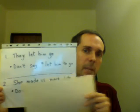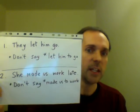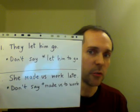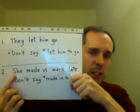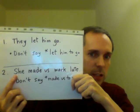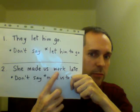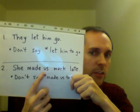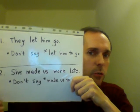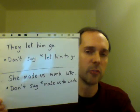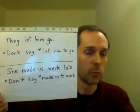With the verb make, we use the same pattern. We say, she made us work late. Notice the change of subject — the first subject is she. The second subject, the subject of the verb work, is us. We do not use the to infinitive form of the verb. We do not say, she made us to work.